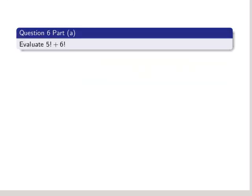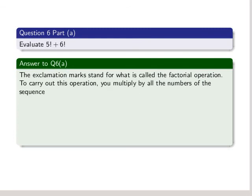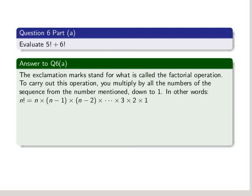Part A was evaluate 5 factorial plus 6 factorial. The exclamation marks stand for what is called a factorial operation. To carry out this operation, you multiply by all the numbers of the sequence from the number mentioned down to 1. In other words, for n factorial, we multiply n by n minus 1, then n minus 2, all the way down to multiplying it by 3, by 2, and finally 1. That's the factorial.